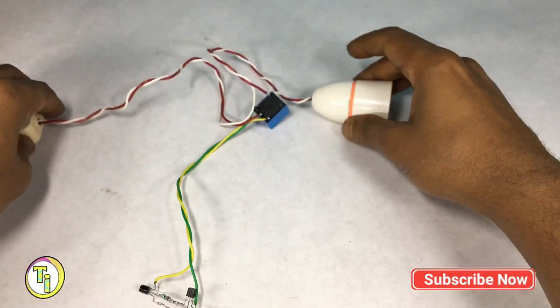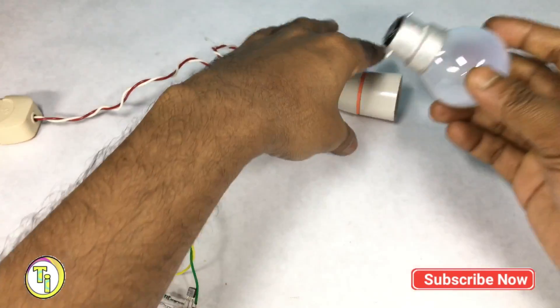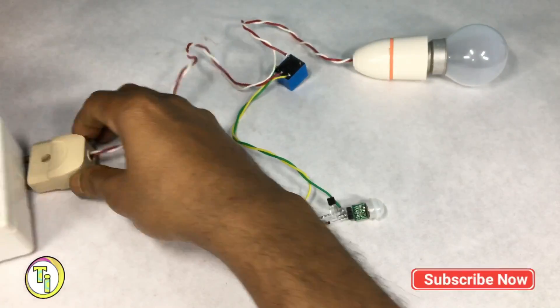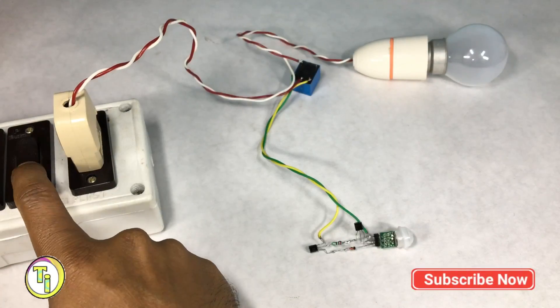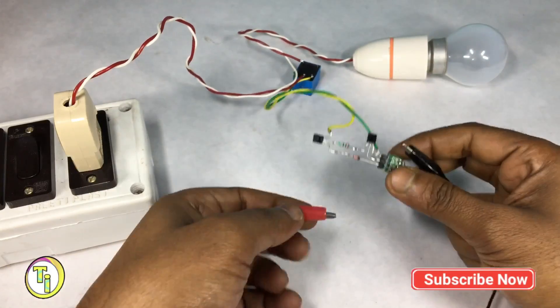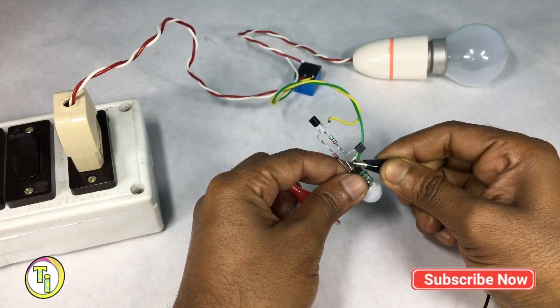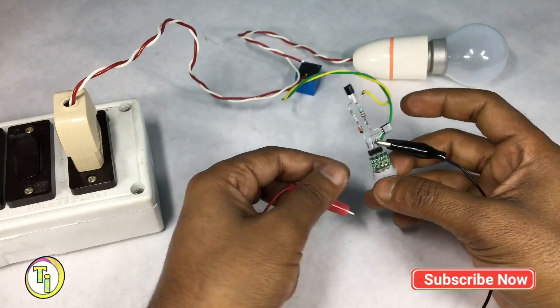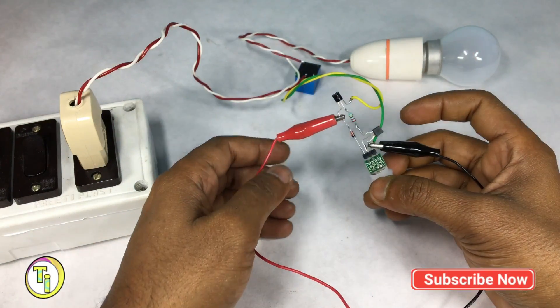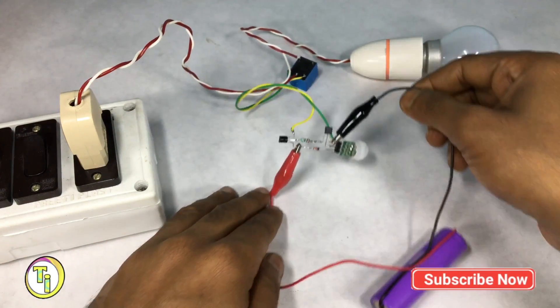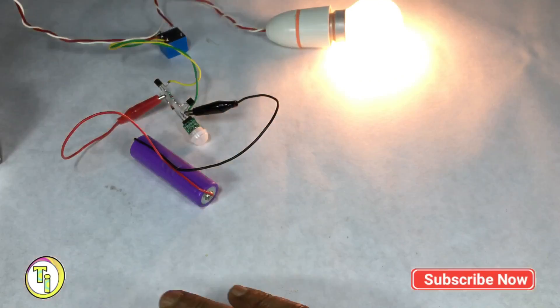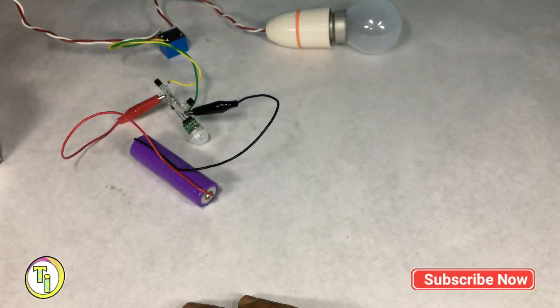Now the circuit is ready. Connecting to the mains. Again I am using 4.2 volt lithium-ion battery. And again the circuit works fine.